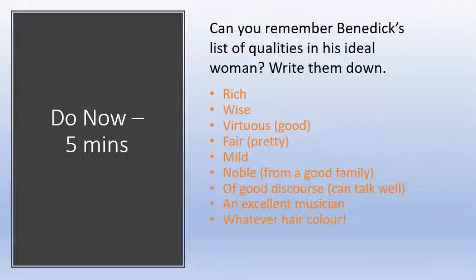Hello Year 9, welcome back for some more Much Ado About Nothing. Today we're going to be looking at the scene where Benedict gets fooled. Don Pedro is putting his plan into action, which if you remember is to get him together with Beatrice.